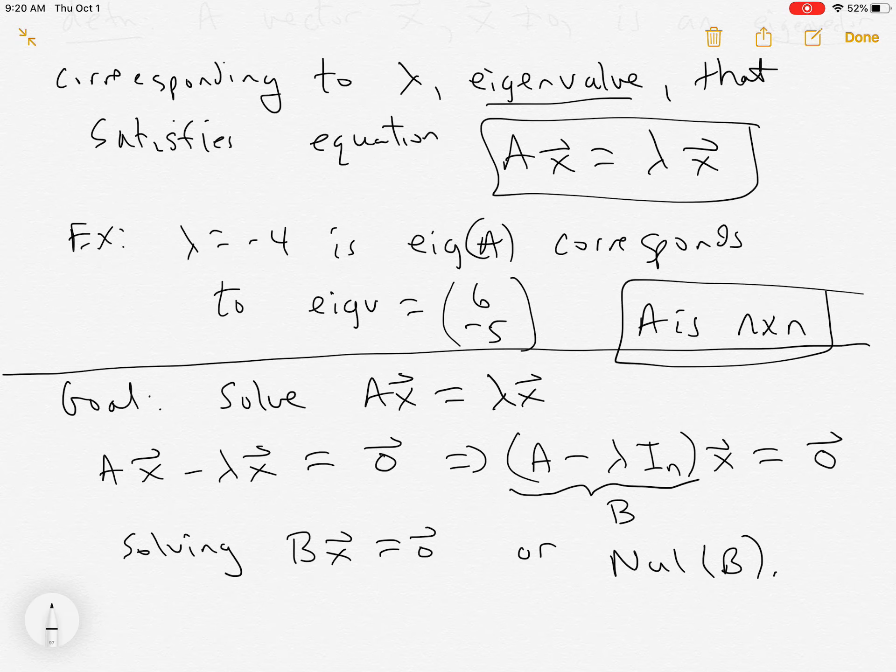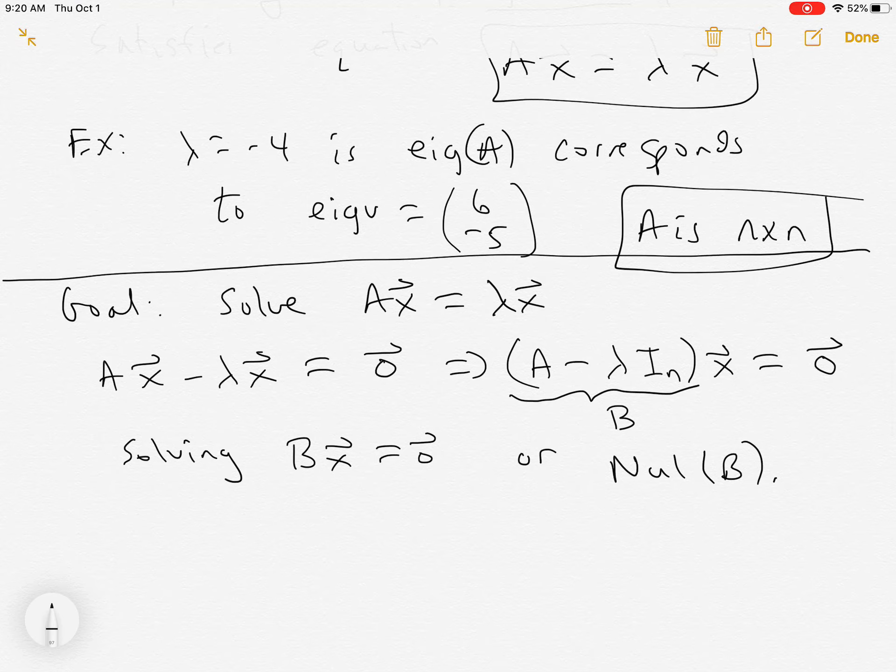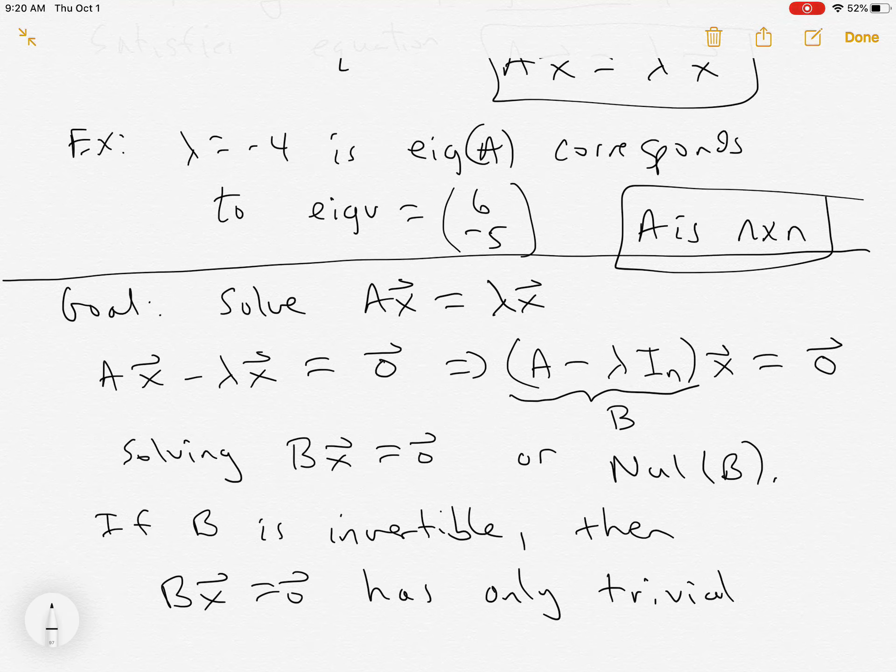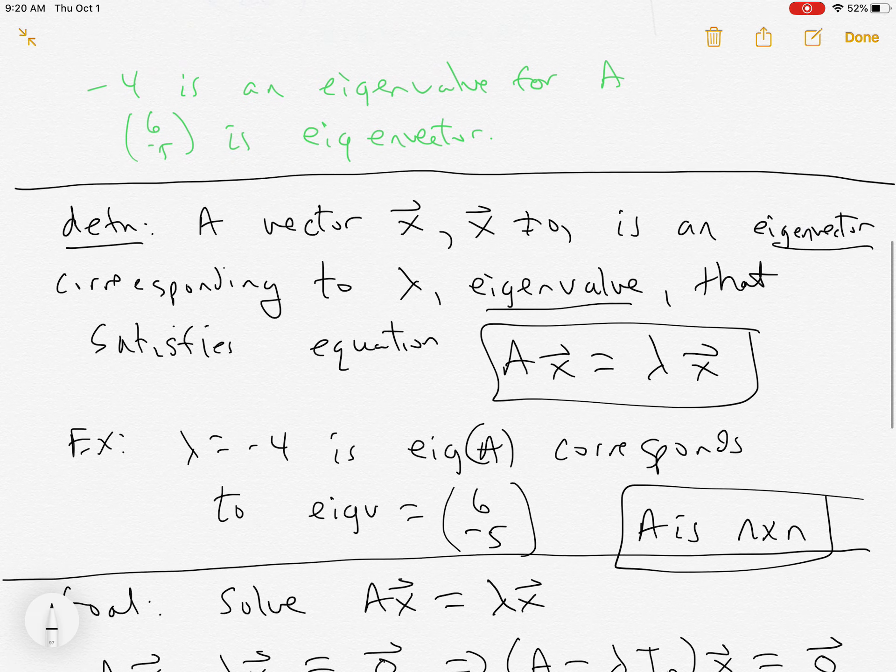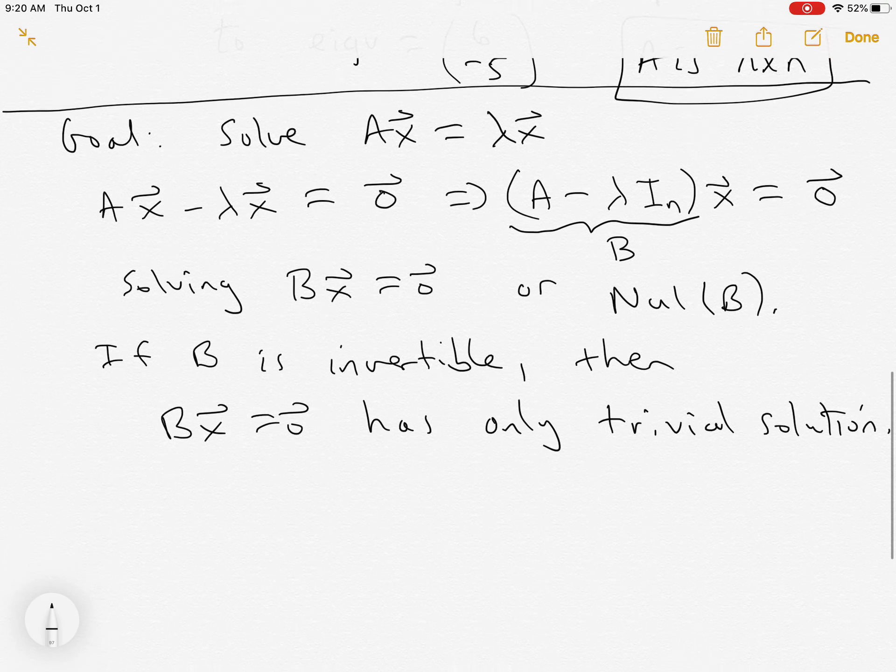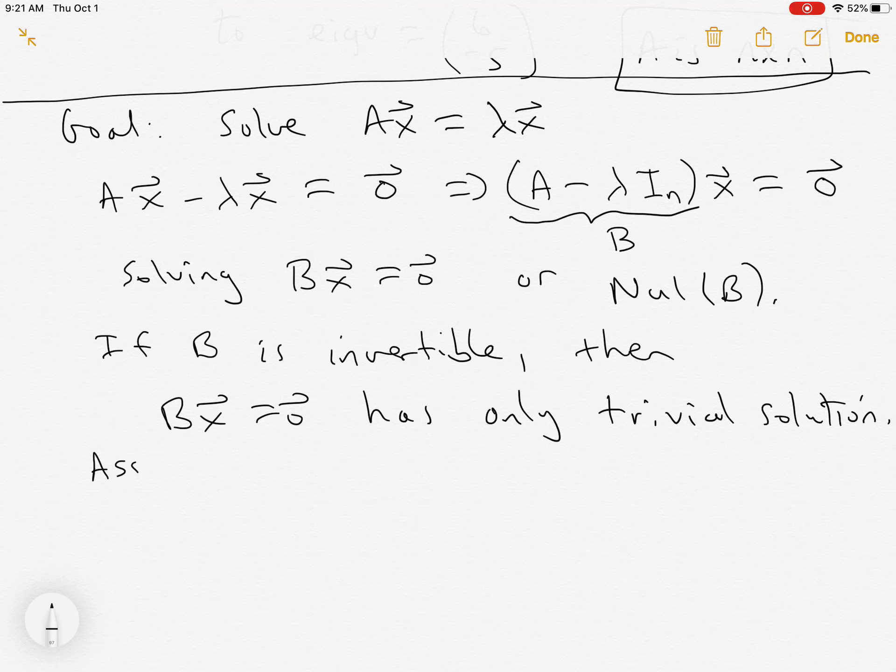First and foremost, remember, if B is invertible, then Bx = 0 has exactly one solution, and that solution is only the trivial solution. So if B is invertible, then x is zero, the zero vector, and we've broken this part. So we have to assume, or we force, we're going to make the assumption, but we force B to be singular.